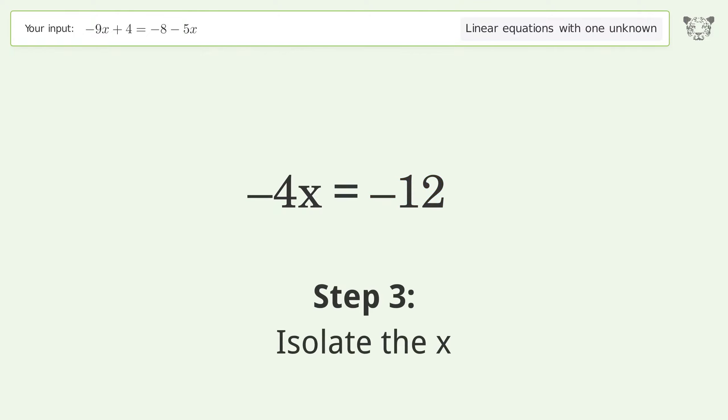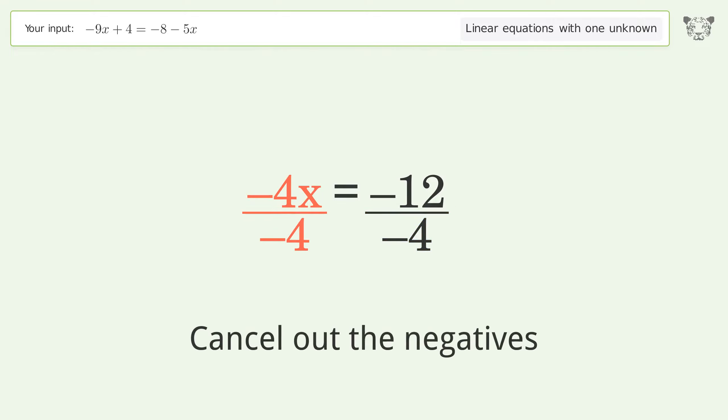Isolate the x. Divide both sides by negative 4. Cancel out the negatives. Simplify the fraction.